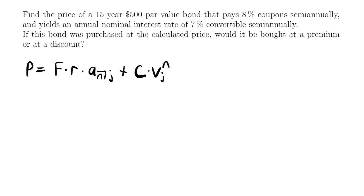Let's identify as many of these values as we can. First, we have a 15-year bond. To figure out n, the number of coupon periods, we have to account for how many times a coupon is paid each year. n is not just 15 because coupons are not paid every year — they are paid semi-annually. This is true for all bonds: unless stated otherwise, bonds have coupons paid semi-annually.